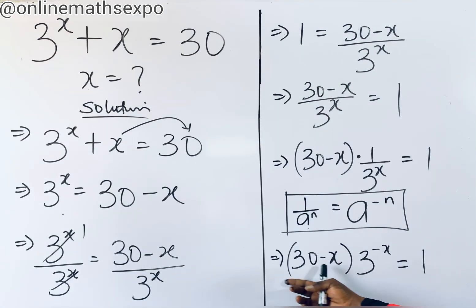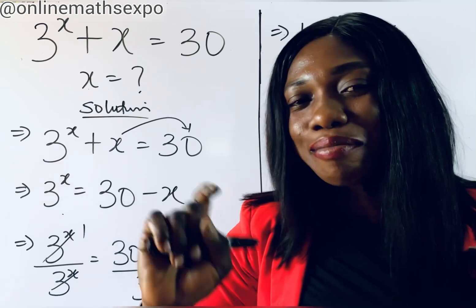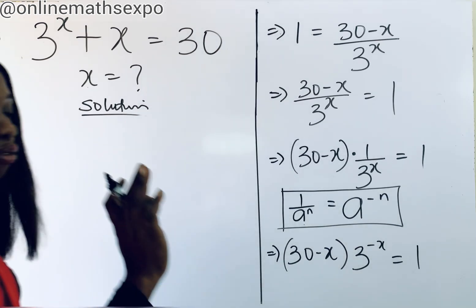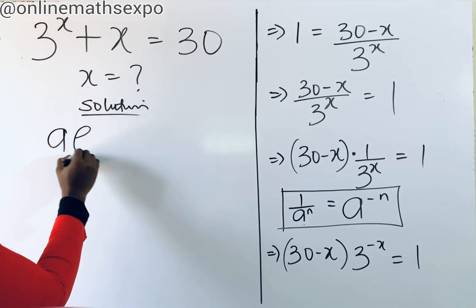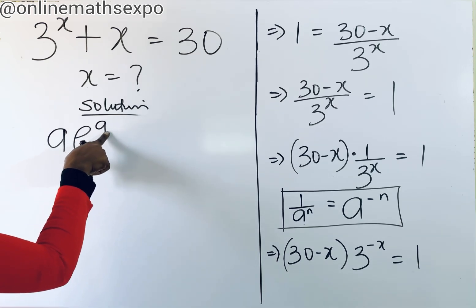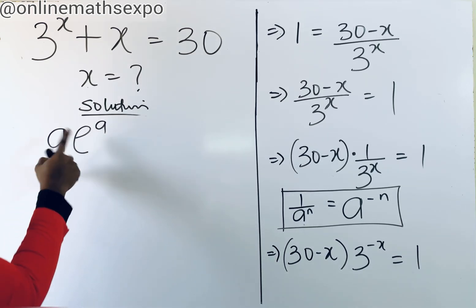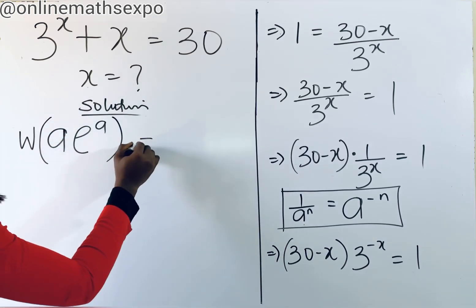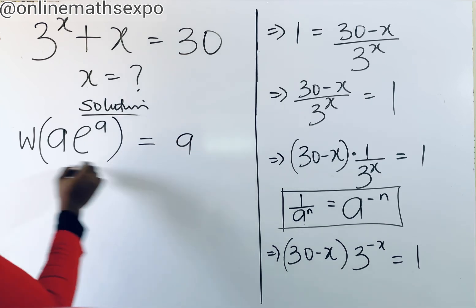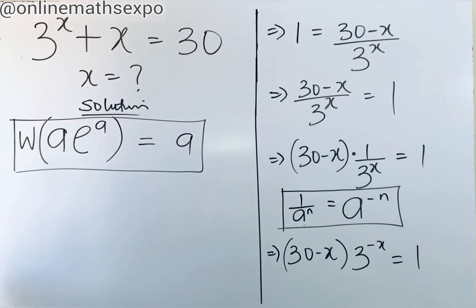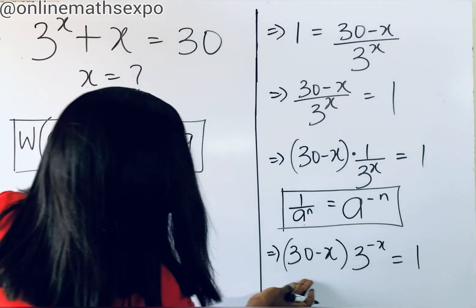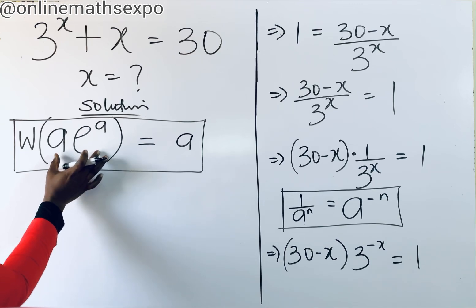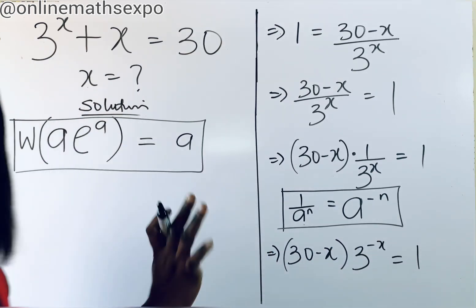Now, when you have a function of this form, remember your Lambert W function. For every a multiplied by e to the power of a — where the power and the coefficient of e are the same — you introduce your Lambert W function, and it will be equal to a. Looking at what we have here, the powers are not the same, so we need to force this into that form.